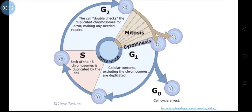Each of the 46 DNA molecules gets replicated during S phase. After S phase comes G2 phase, which is Gap 2 phase. This is a double-check stage of the cell cycle where it checks all the duplicated chromosomes for any errors, and repair is done if there is an error in the DNA replication.